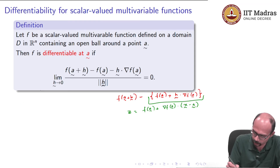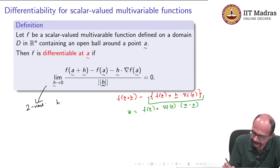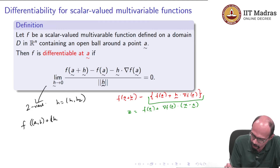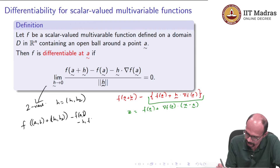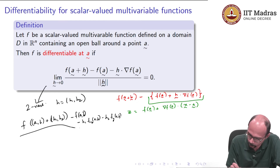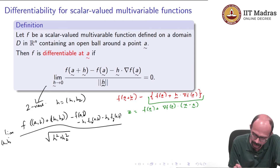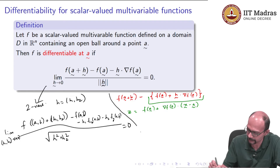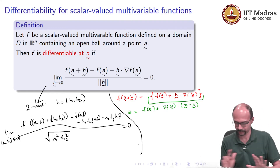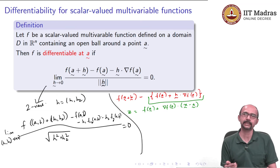Let us expand this out for two variables and see what we get. Writing h̃ = (h₁, h₂), the definition says: the limit as (h₁, h₂) tends to (0, 0) of [f(a+h₁, b+h₂) − f(a,b) − h₁·fₓ(a,b) − h₂·f_y(a,b)] divided by √(h₁² + h₂²) equals 0. That is exactly what the definition is saying. You can see that the expression in the numerator is exactly in accordance with the equation of the tangent plane.